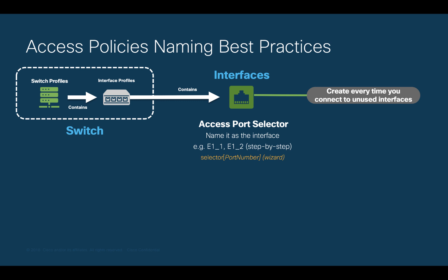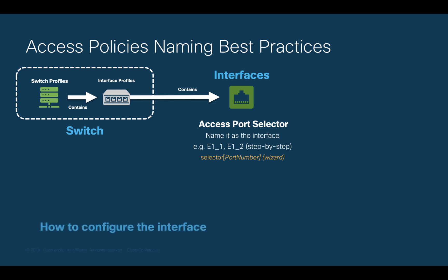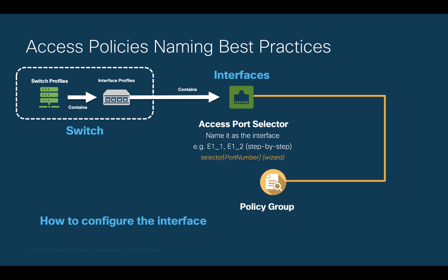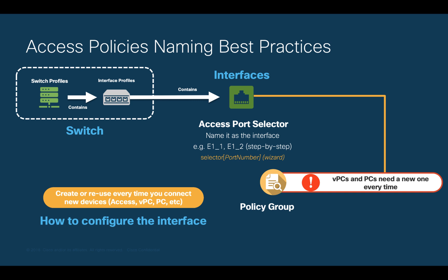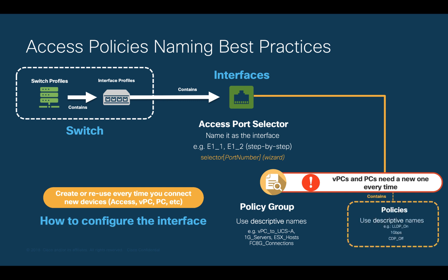This is where you will create port selectors and associate them to the corresponding interface profile. Just create the port selector once per interface and keep it simple by using the interface ID as its name. Keep in mind that if you use the wizard, the name will be automatically assigned. Remember, we must specify how to configure that interface and we do this by creating policy groups which include policies. You need to either reuse or create policy groups every time you connect new devices. You can reuse them if they are access policy groups, but you need to create new and dedicated ones for each port channel and virtual port channel connection. Use simple and descriptive names for your policy groups based on what you are connecting. The same naming principle applies to your policies based on the features you are modifying. Just create your policy once, since you may use it in many policy groups without restrictions.